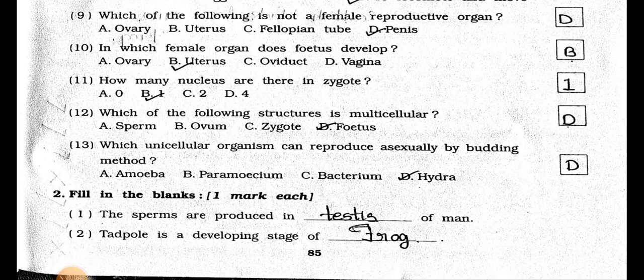Now see the filling in the blanks. Main 2, filling in the blanks, 1 mark each. Number 1: The sperms are produced in the blanks of men. Answer is Testes. Number 2: Tadpole is a developing stage of blanks. Answer is the Frog.